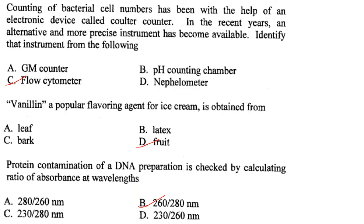Counting bacterial cell numbers has been done with the Coulter counter. A more precise alternative instrument that has become available is the flow cytometer. Answer is option C.